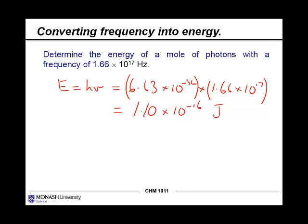An energy, when you're using SI units, is given in joules. Now, the question actually asks to determine the energy of a mole of photons. Here, we've given the energy for one photon. And so to answer the question properly, we need to multiply this value by Avogadro's number.